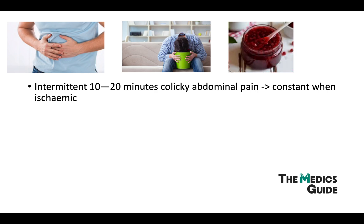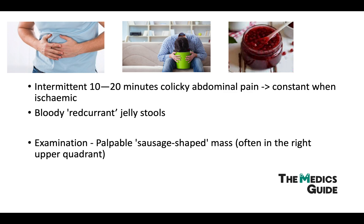Thirdly, the bowel can hemorrhage, producing red currant jelly stools — that's a key term that comes up in exams frequently, so remember that. On examination, especially in the right upper quadrant, you might feel a sausage-shaped mass, and on auscultation you'll hear high-pitched sounds indicating obstruction.